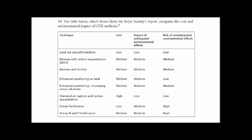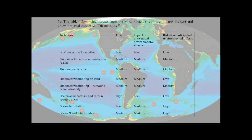Ocean fertilization: costs are low, impacts are medium, and the risk of unanticipated environmental effects is high. Later in this report they state that the UK and the US are already testing ocean fertilization. So basically, one of the techniques with the most risk of unanticipated environmental effects is already being tested and used in their oceans. That's bad.